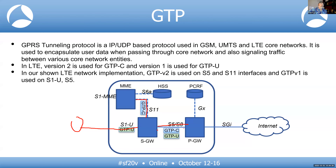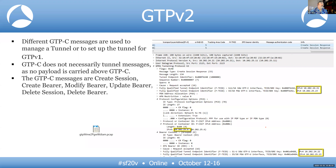Different GTP-C messages manage or set up tunnels. GTP-C itself doesn't tunnel messages and has no payload — it is simply used to create, modify, or delete sessions. This is what GTP version 2 (GTP-C) looks like and it carries all your endpoint identifiers.